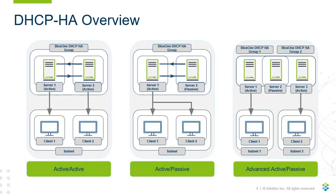This configuration is also known as hub-and-spoke. Advanced-Active-Passive is beneficial in situations where many branches may exist and service uptime is important. One passive server can exist as a backup to many branch locations, reducing the amount of servers required, while still maintaining the benefits of DHCP High Availability.